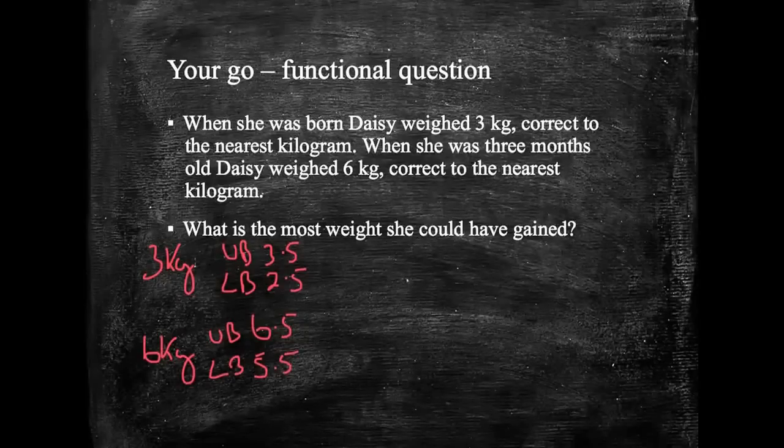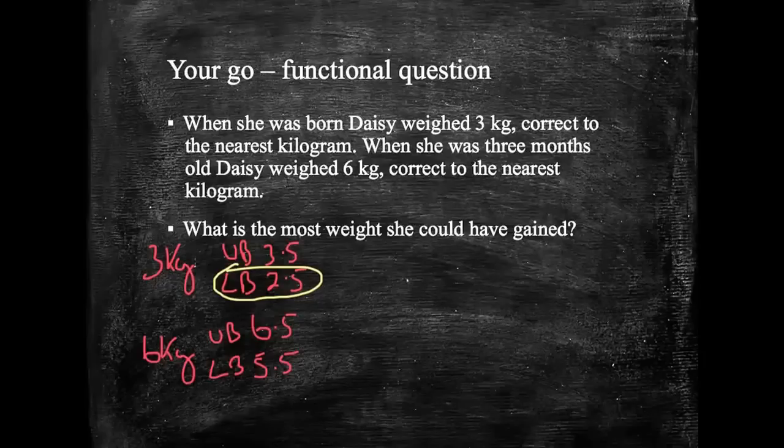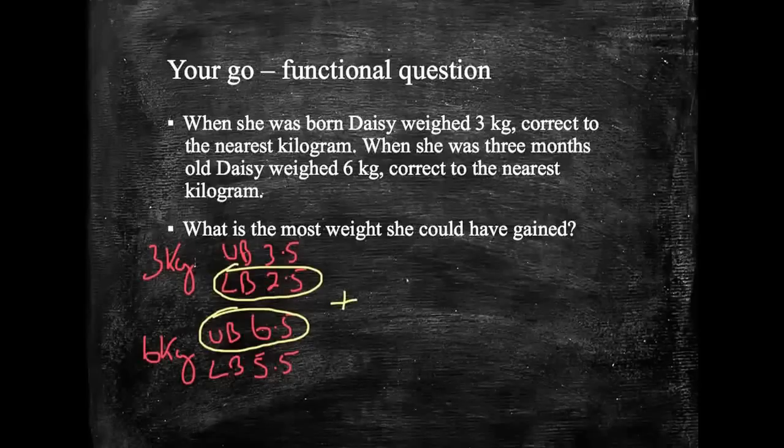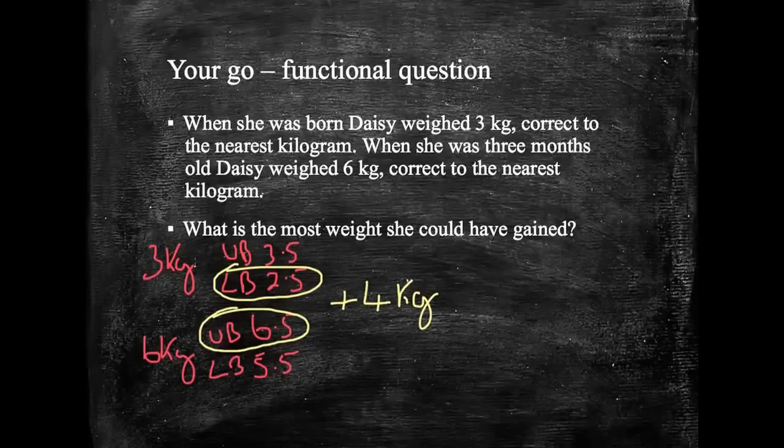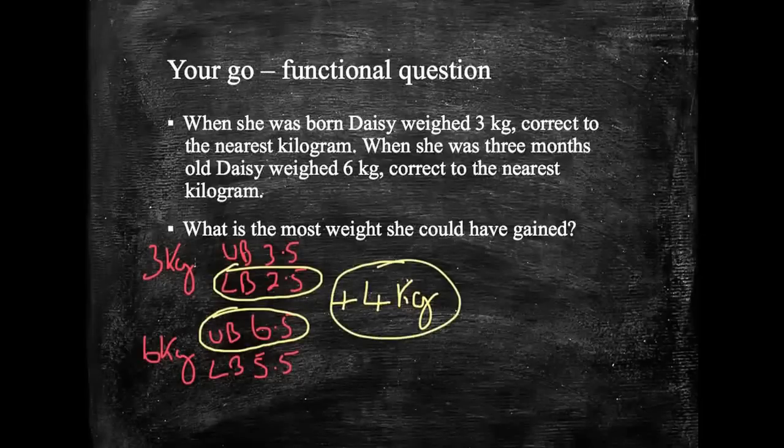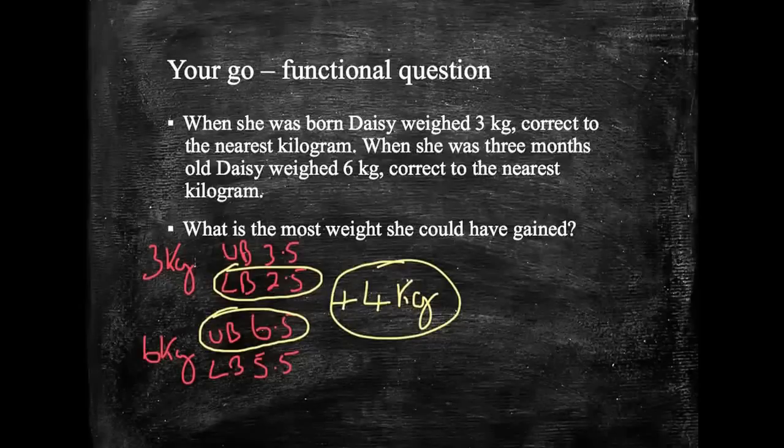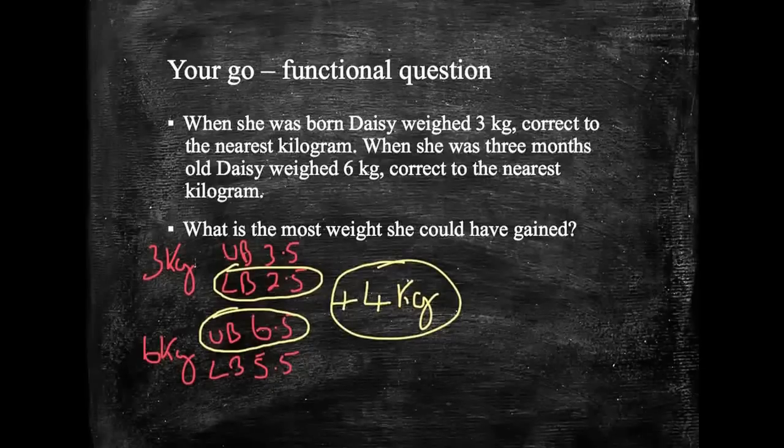What is the most weight she could have gained? So the most weight she could have gained would have been from here up to here. So the most weight she could have gained would have been adding on 4 kilograms. If you worked every single sum out in order to get this final answer of 4, well done. It doesn't make any difference. You're not going to lose any marks for doing it. All you've lost is a little bit of time, but better to pick up the marks rather than dropping them.